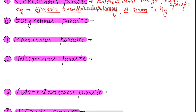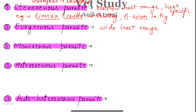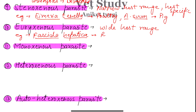Next we have the eurexenous parasite. Eurexenous parasites are those parasites which have a wide host range, just opposite to the stenoxenous parasite. For example, Fasciola hepatica has a host range that includes ruminants, horse, dog, pig, and man. Another example can be found in horse, camel, dog, and ruminants. These are examples of eurexenous parasites.